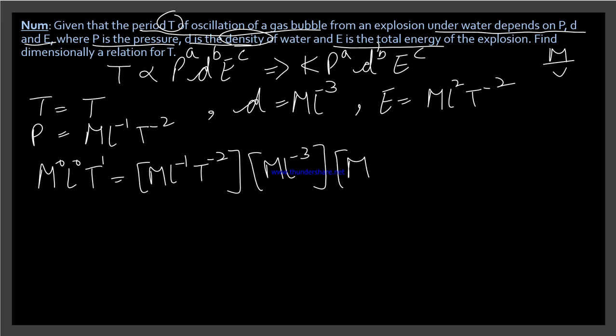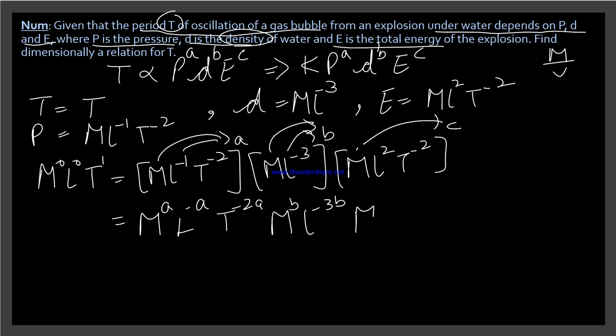And E's value is M L^2 T^-2. Now put the powers a, b, c on these. Now open the bracket: M to the power a, L to the power minus a, T to the power minus 2a. Similarly, M to the power b, L to the power minus 3b.